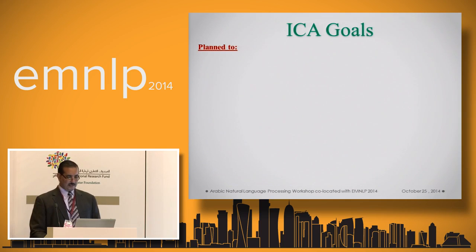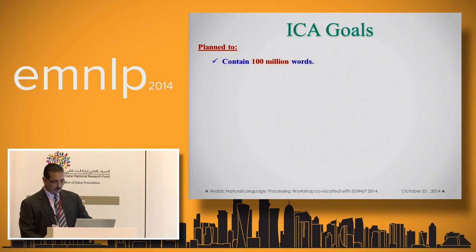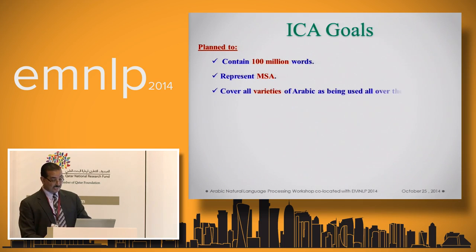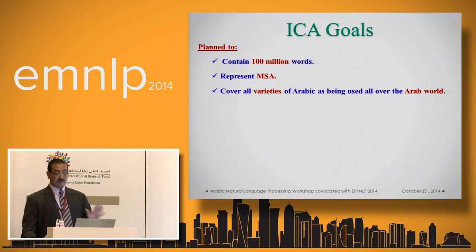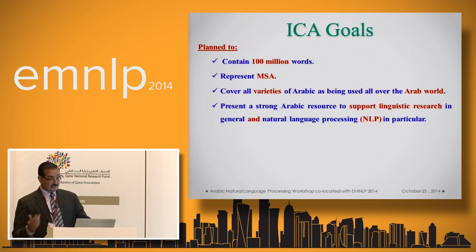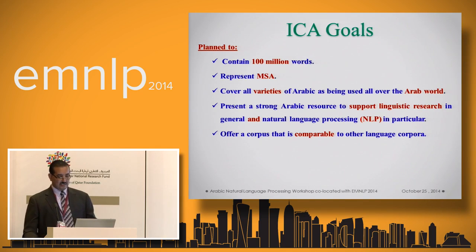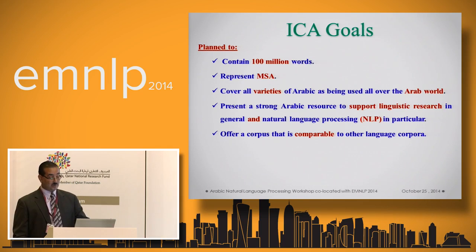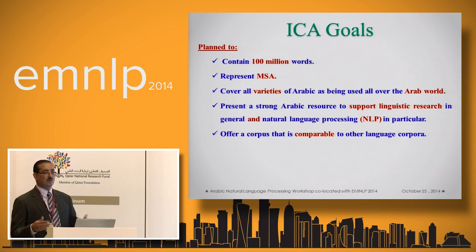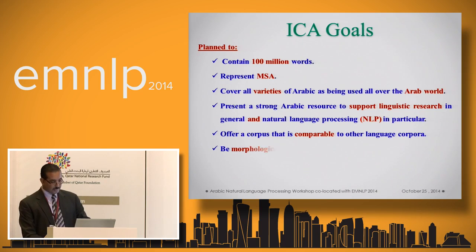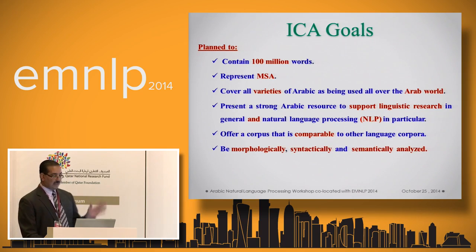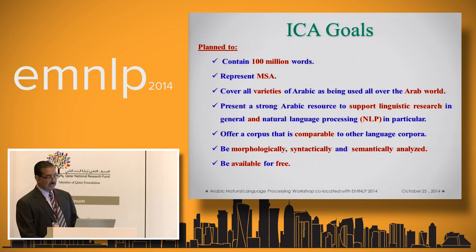For our project, we have certain goals. We plan to have our corpus at one hundred million words and represent MSA, and to cover all varieties of Arabic as being used all over the Arab world. We need to make a strong support for Arabic language resources concerning linguistic research in general and NLP in particular. We intend to offer a comparable corpus with other languages — the International Corpus of Arabic is comparable to the International Corpus of English. We intend to make it available and analyzed morphologically, syntactically, and semantically, and we hope to offer it completely for free.